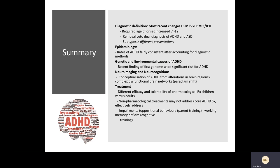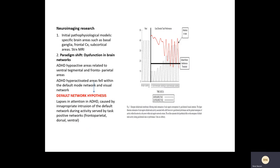Looking at neuroimaging research, initial models focused on specific brain areas using structural MRI, but a major paradigm shift has been to conceptualize dysfunctions within brain neural networks. The authors state that the default network hypothesis is arguably one of the most inspiring proposals in the neuroscience of ADHD over the past 20 years. What they say is that lapses in attention in ADHD are caused by inappropriate intrusion of the default network — the resting networks — during activities served by task-positive networks.